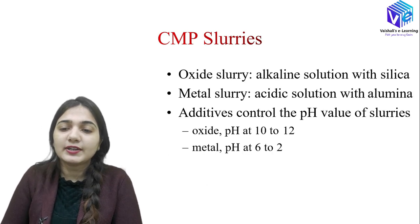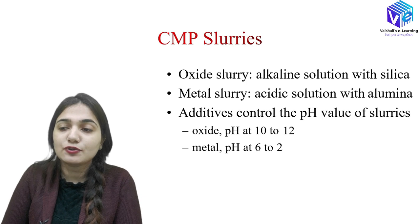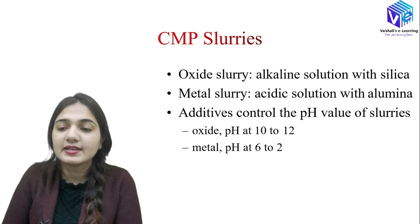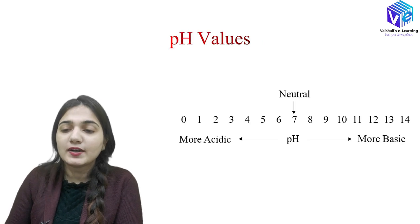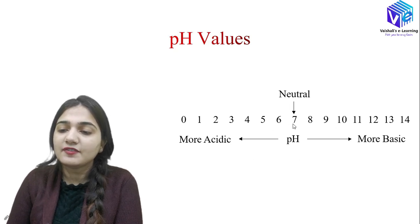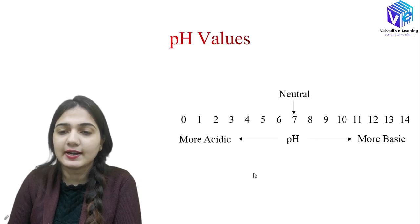Coming to the types of slurry: we have oxide slurry and metallic slurry. The oxide slurry is an alkaline solution with silica, having pH at 10 to 12. The metal slurry is acidic with alumina, having pH from 2 to 6. Neutral pH is at 7; moving toward 0 gives acidic character and moving from 7 to 14 gives basic character. So oxide slurry is basic and metallic slurry is acidic.